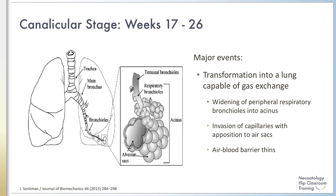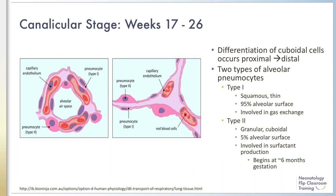During the canalicular stage between gestational weeks 7 and 26, three major events take place. First, the lung tissue gains the capability to exchange gas. This happens by widening of the peripheral respiratory bronchioles into acini — an acinus is a cluster of cells at the end of the respiratory bronchus that resembles a berry and is the precursor to saccules and alveoli. There is invasion of capillaries with opposition to the air sacs, and the air-blood barrier thins, allowing gas exchange to occur more efficiently.